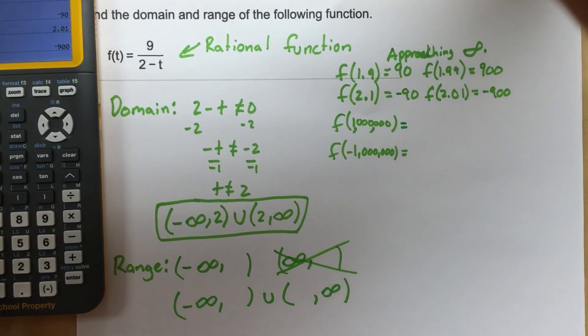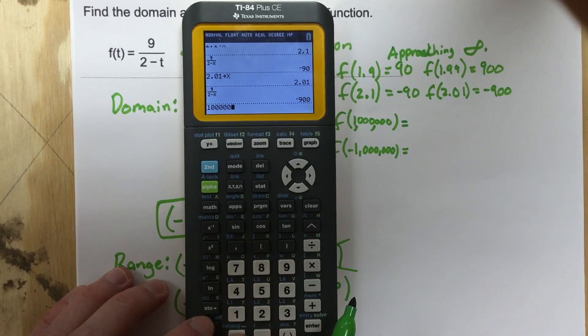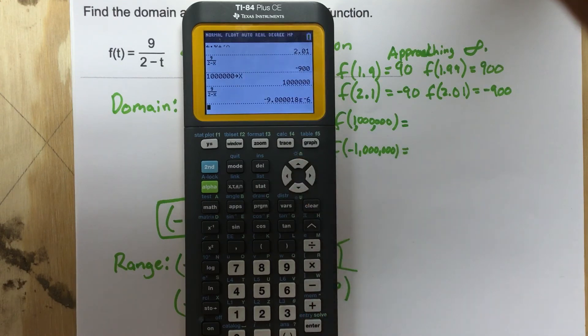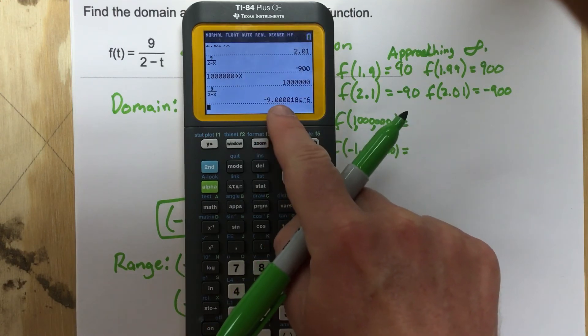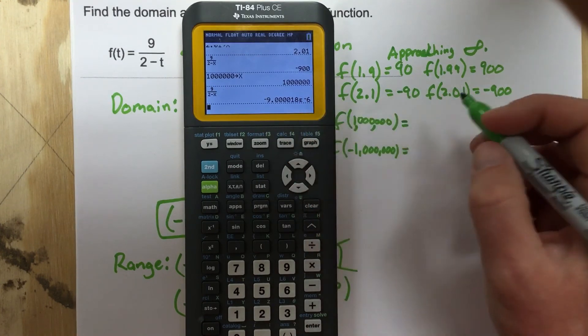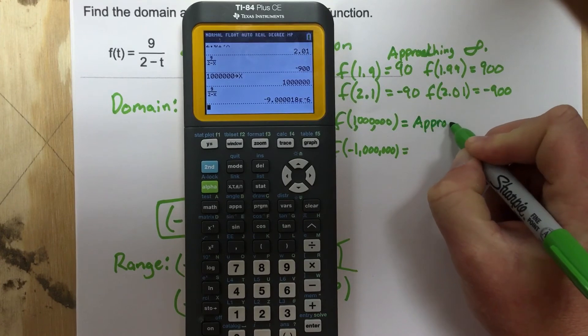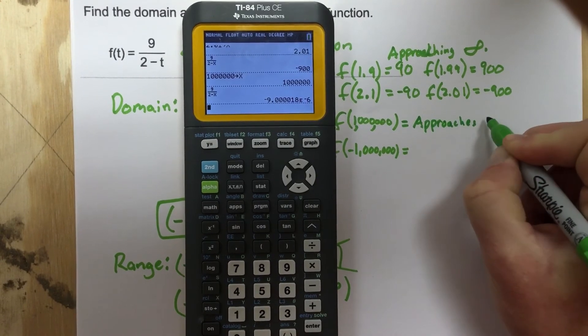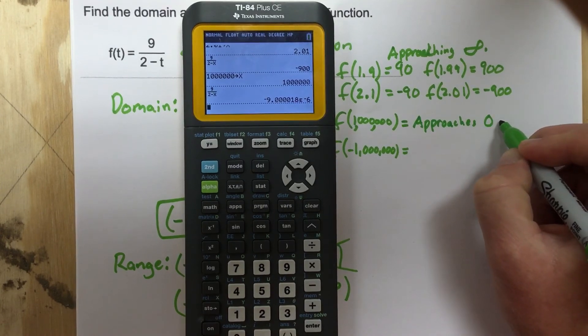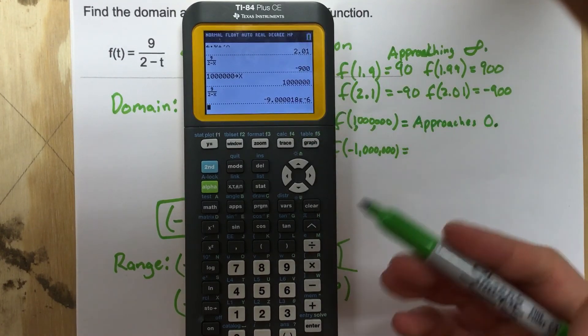So let's go ahead and check now f of a million. So we're going to say one million stored as x. Grab that function. I get a really small number that's negative. So this is essentially that's really close to zero. So I'm approaching zero. So f of a million approaches zero from the negative side.